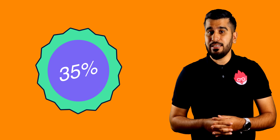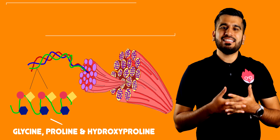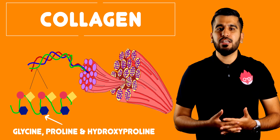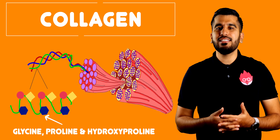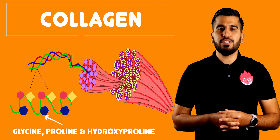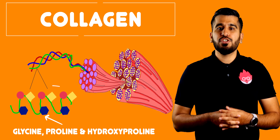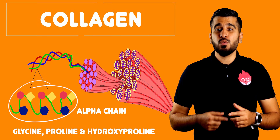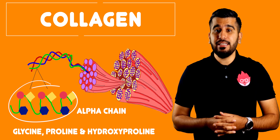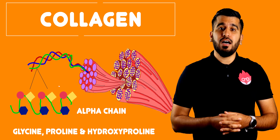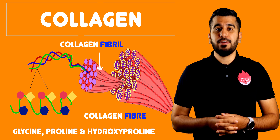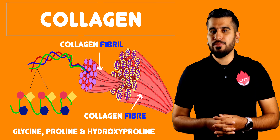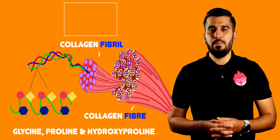Collagen makes up approximately 35% of animal protein. A single polypeptide chain is composed of repeating units of glycine, proline and hydroxyproline, which are called the alpha chain. Three alpha helix chains wound together in a tight triple helix, together with other bundles, form collagen fibrils. These collagen fibrils together with other collagen fibrils form the collagen fibre.